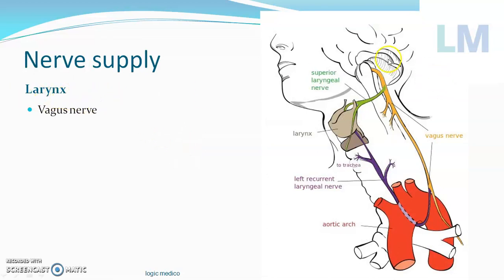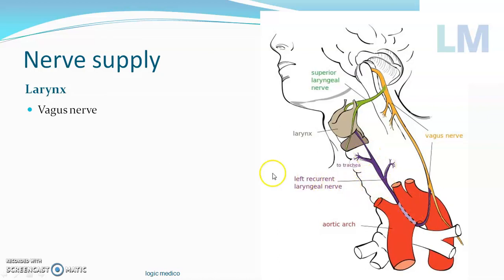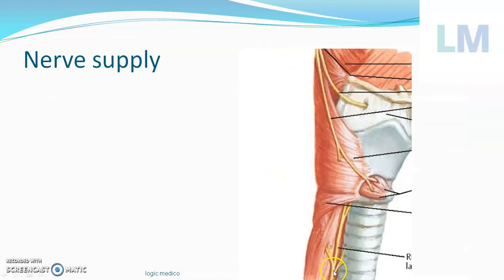As usual, all the muscles of the larynx are supplied by the vagus nerve, or the 10th cranial nerve. The 10th cranial nerve gives one branch above — the superior laryngeal nerve — and one below — the inferior laryngeal nerve — which winds around the arch of the aorta and comes back. On the left side it winds around the arch of the aorta, on the right side around a different structure, but it is called the recurrent laryngeal nerve.